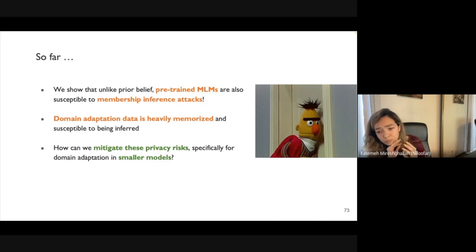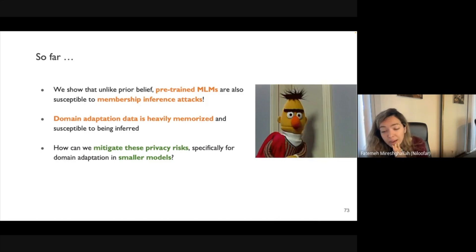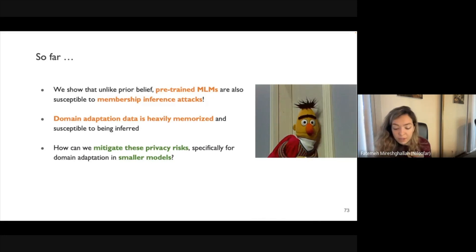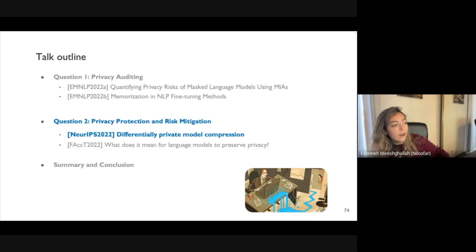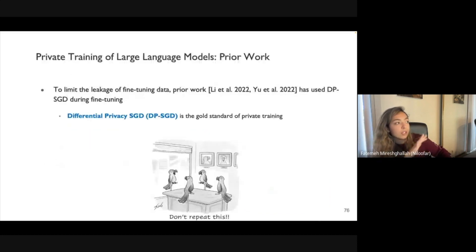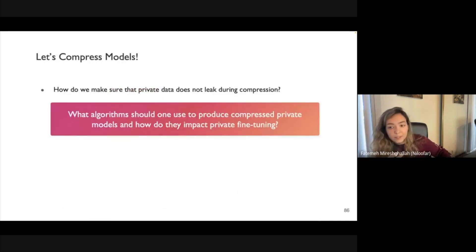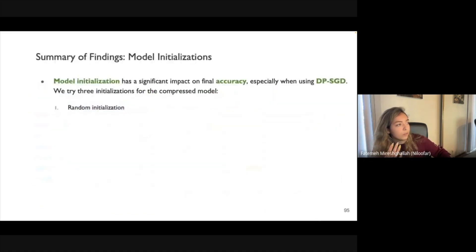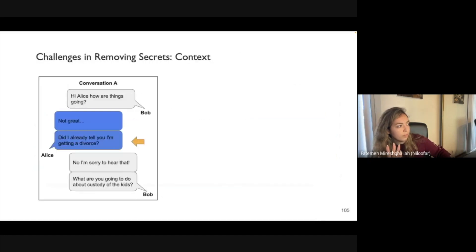Wrapping up: pre-trained models memorize parts of their training data, and domain-adapted fine-tuning data is even more heavily memorized — we get much higher recalls on fine-tuning data than on pre-training data. We're running short on time, so I'll skip the differential privacy section. The slides and paper are available. Let's go to the summary and discuss future directions.